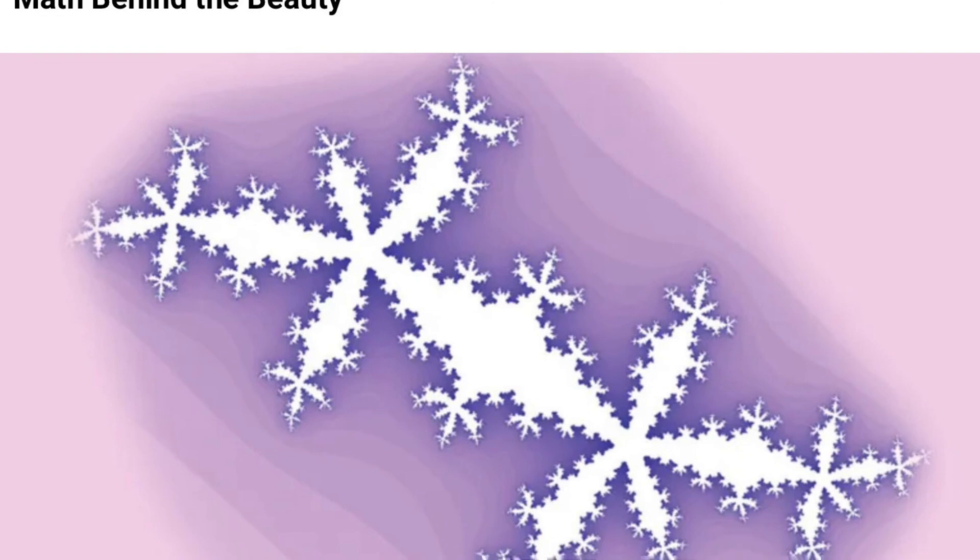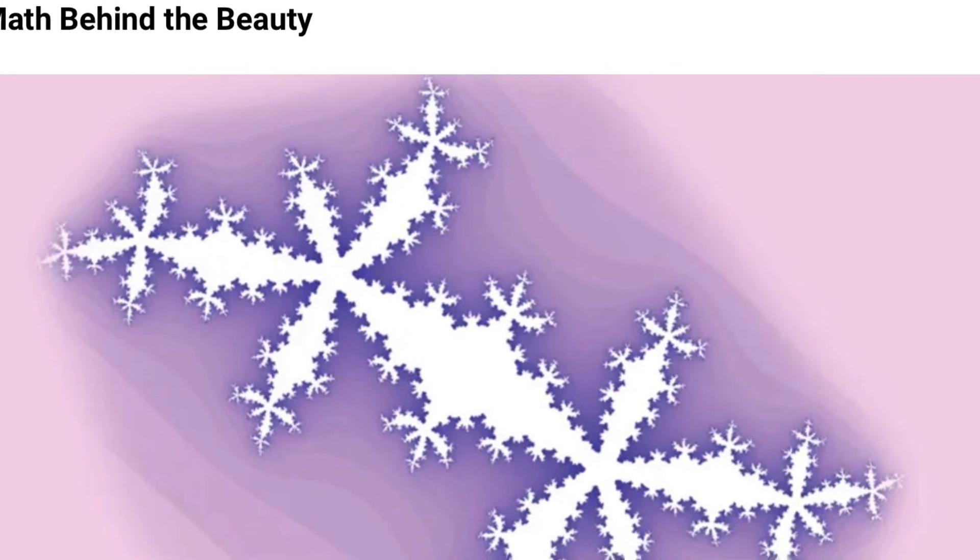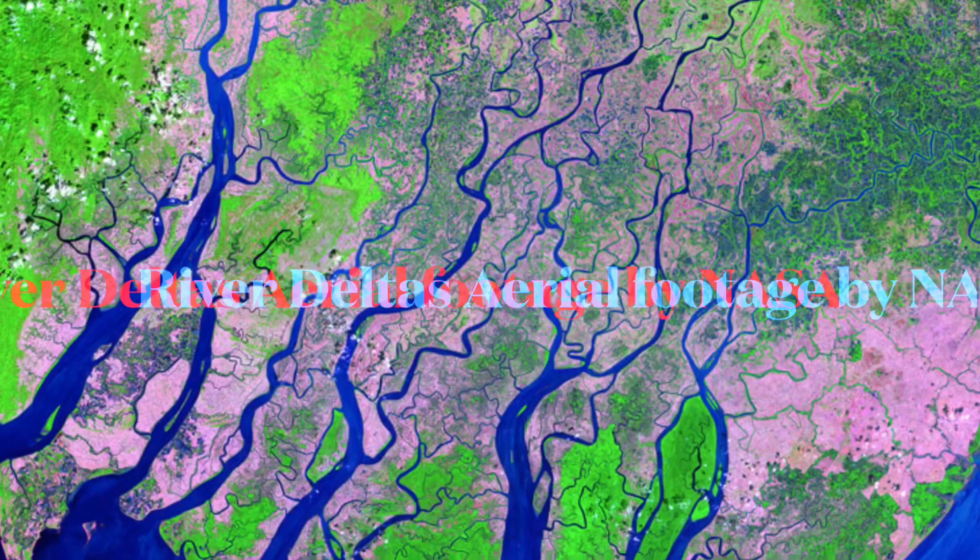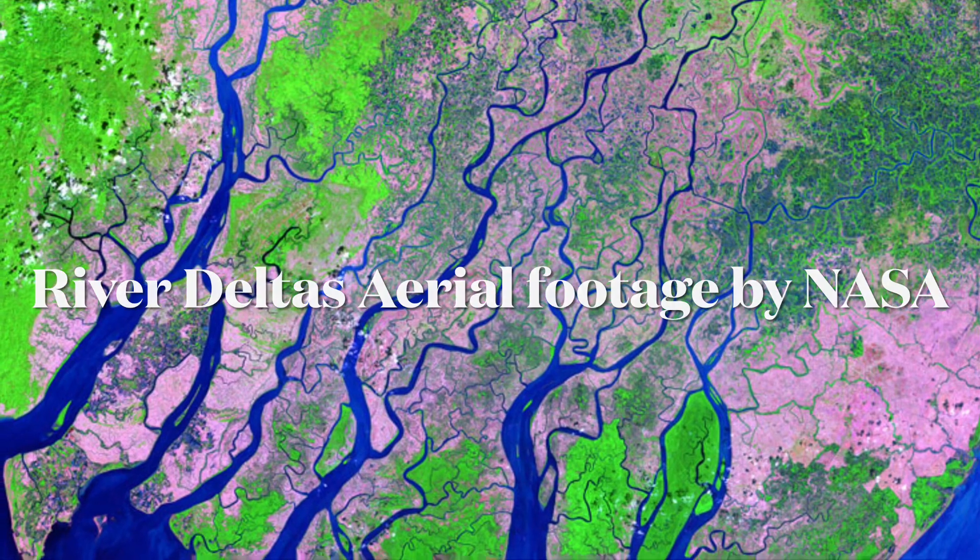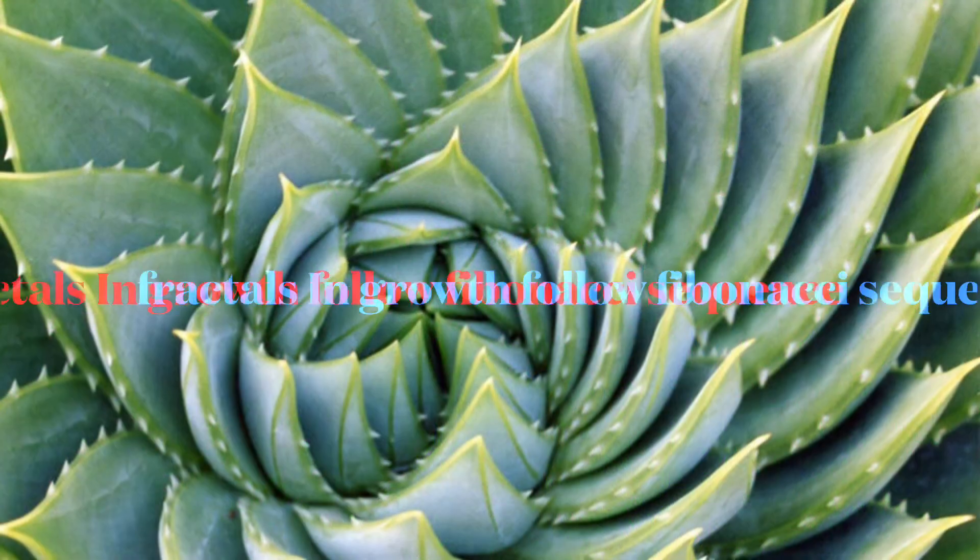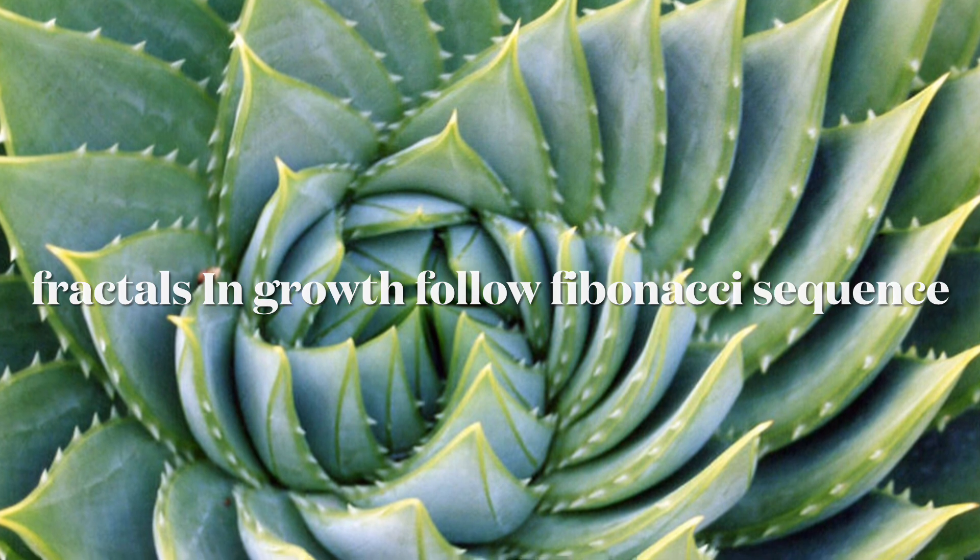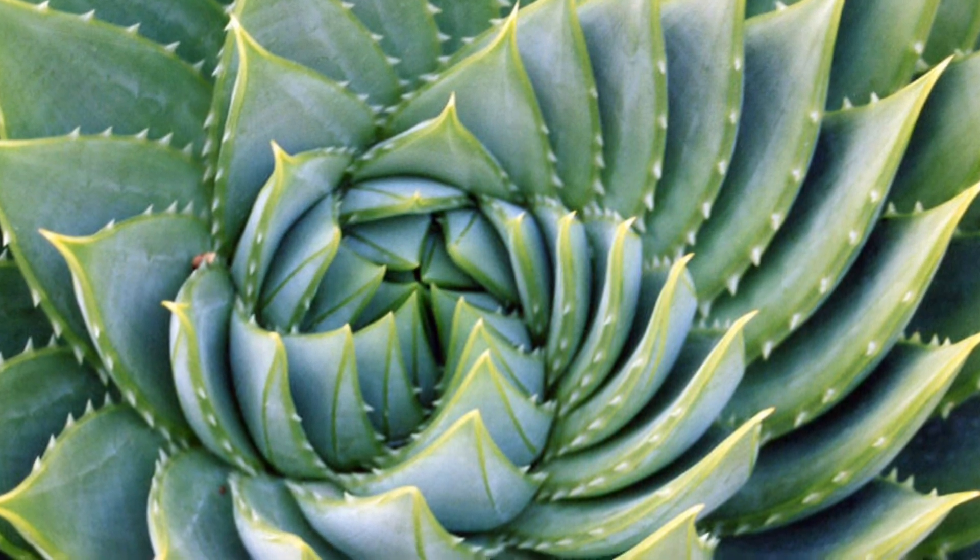Now, you see these patterns in broccoli. These are generated math behind the beauty. These are river deltas. And finally, the growth pattern which is a Fibonacci sequence. Thank you for watching. Good luck.